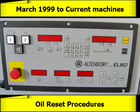In this video, we will talk about how to reset an oil error in either the rip, cross, or tilt display. This will only cover F45 or Elmo machines made between the dates March 1999 to 2010.